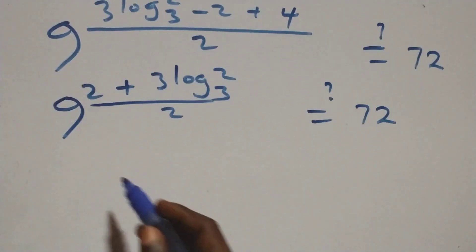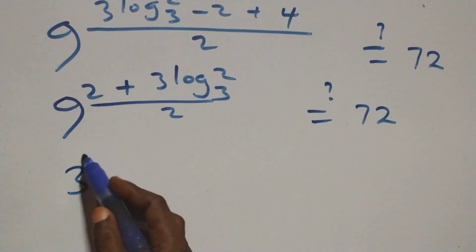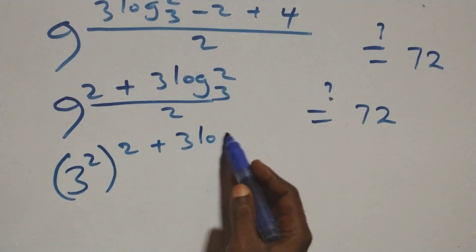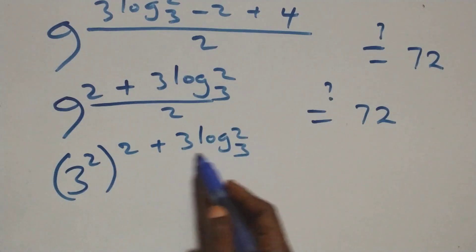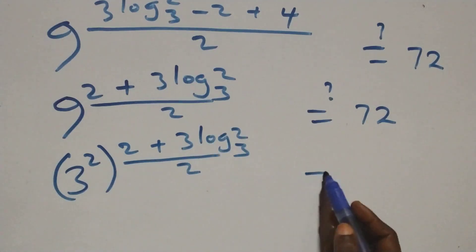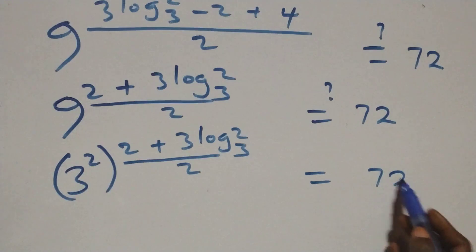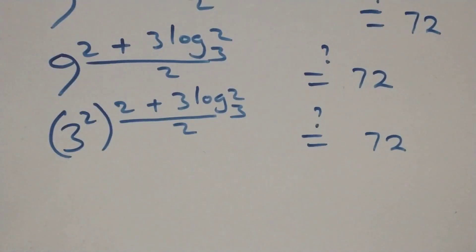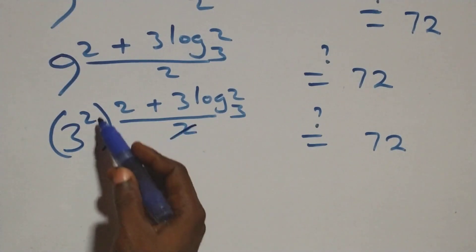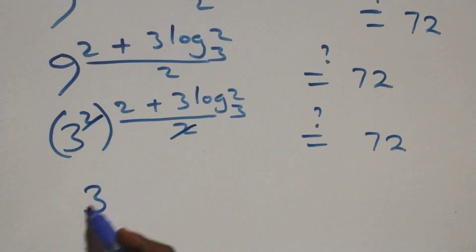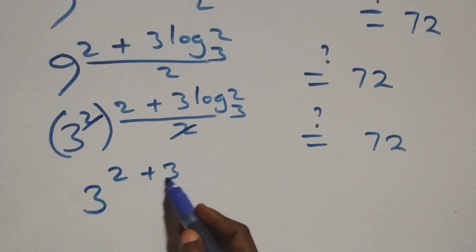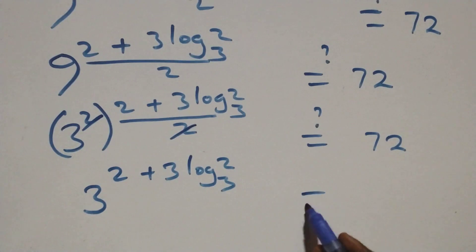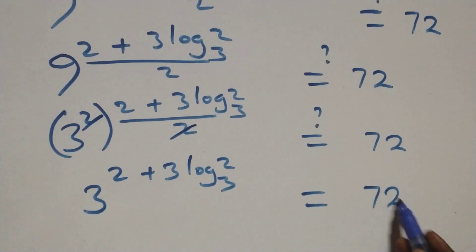9 can be written as 3 squared, which is raised to power (2 plus three log 2 base 3), all over 2 — is it equals 72? We apply the law of indices and we have 3 raised to power (2 plus three log 2 base 3) — is it equals 72 on this side?